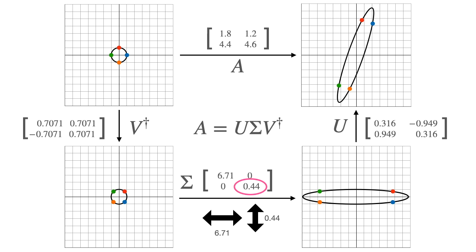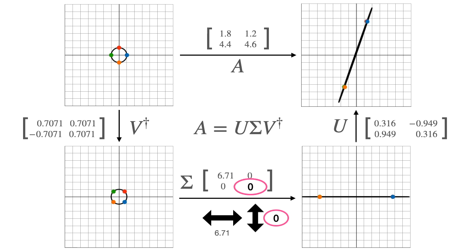So what if we said: this 0.44 is really small — let's turn it into zero and see what happens. We turn it into zero, which means we're compressing the ellipse into a line, and our transformation becomes one that turns the entire plane into a line — a degenerate transformation. And something very special happens: if we turn that 0.44 into zero, our original matrix changes to 1.5, 1.5, 4.5, 4.5. Notice how strange this matrix is — its rows are the same. This is an example of a degenerate matrix.